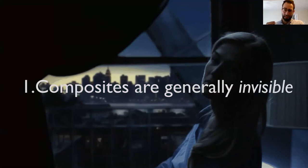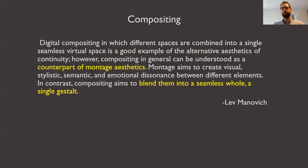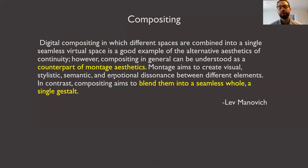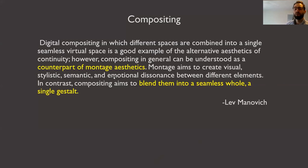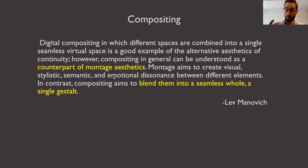So I want to draw your attention to major claims Manovich makes about compositing. First, when it comes to digital moving images, composites are generally invisible. I've shown you this VFX reel so you can see the discrete elements, but when watching the film, you don't see them — the seams are very slight. He'll say: digital compositing, in which different spaces are combined into a single seamless virtual space, is a good example of an alternative aesthetics of continuity. However, compositing in general can be understood as a counterpart of montage aesthetics. Montage aims to create visual, stylistic, semantic, and emotional dissonance between different elements; compositing aims to blend them into a seamless whole, a single gestalt.